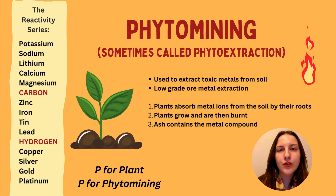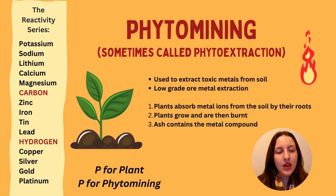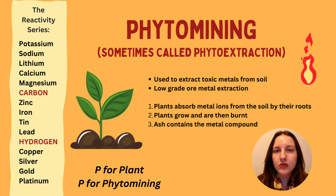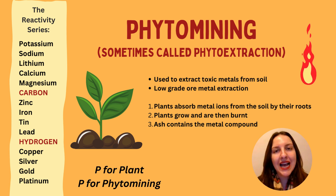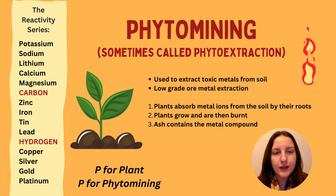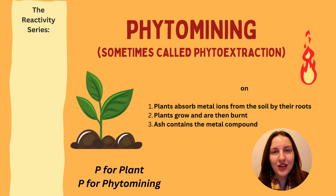As the plants grow in that soil, they absorb through their root system the metals found within it — these metals are in their ion form. As the plant develops and grows, we can collect those plants and burn them, and the ash left behind will actually contain the metal compound. A way to remember this: P is for plants and P is for phytomining or phyto extraction.